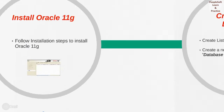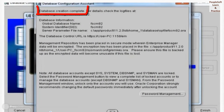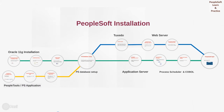Next is to create a blank database. For that, first we need to create a listener using Net Configuration Assistant, and then create a new Oracle Database using Database Configuration Assistant. After successful completion, we'll reach a page which says 'Database creation completed successfully.' This completes the installation of Oracle 11G and creating a blank database.